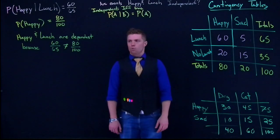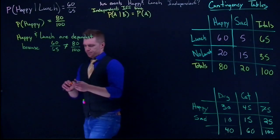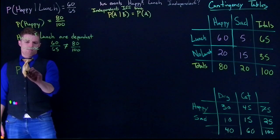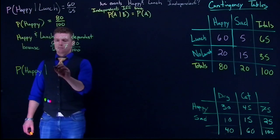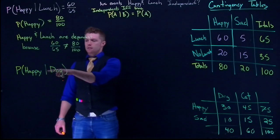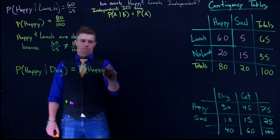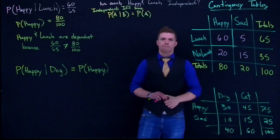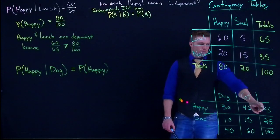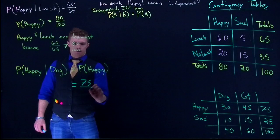With this table, we're going to look at the probability of being happy given that you own a dog. For this to be independent, that conditional probability has to equal the probability of being happy. Looking at the table, the probability of being happy is 75 out of 100 people, so 75 over 100.